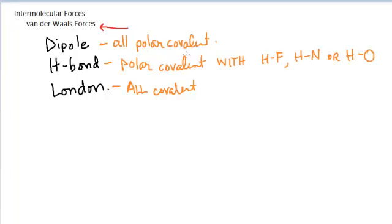If you have a sample of a covalent molecule, you can definitely say there are London dispersion forces present. If the molecule is polar, you can also say that in addition to the London forces there are dipole forces. And if the molecule happens to have a hydrogen bonded to either a fluorine, a nitrogen, or an oxygen, you can also say that there is hydrogen bonding present. A sample might have one of these, or it might have all three.